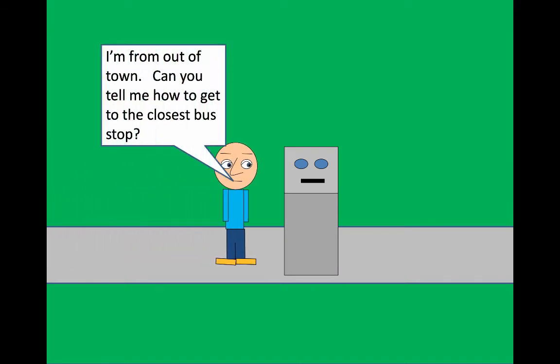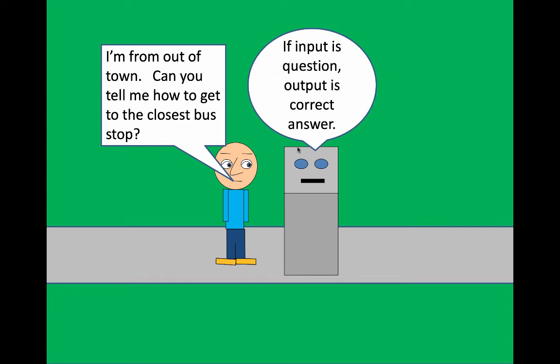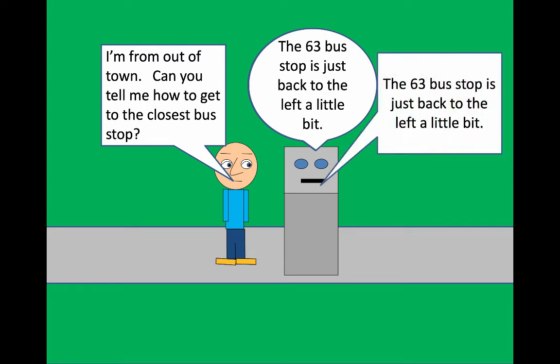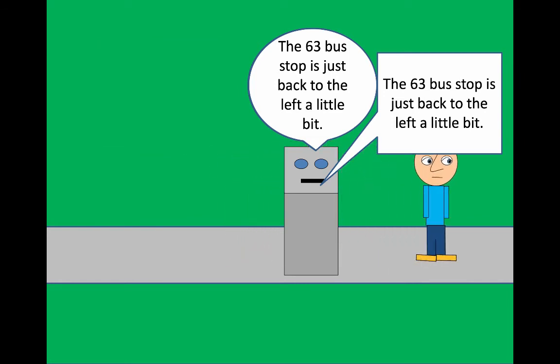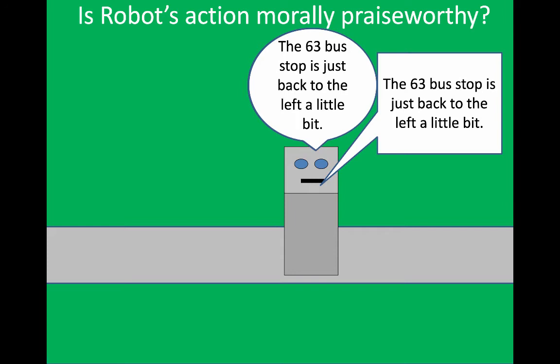And now here's a final case. You have your machine here. This is supposed to be a robot that someone has programmed a certain way. And this blue person comes along and says, I'm from out of town. Can you tell me how to get to the closest bus stop? And the machine goes through the following internal procedure. If input is question, output is correct answer. The 63 stop is just back to the left a little bit, and then says that. And the person says thanks, and then goes off and makes the bus. And here's a question. Is the robot's action morally praiseworthy?